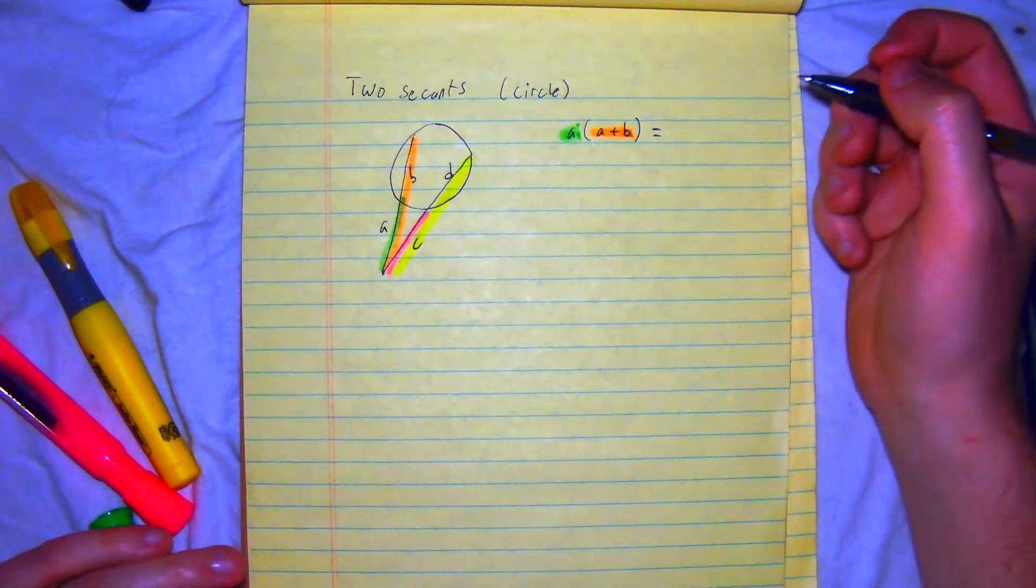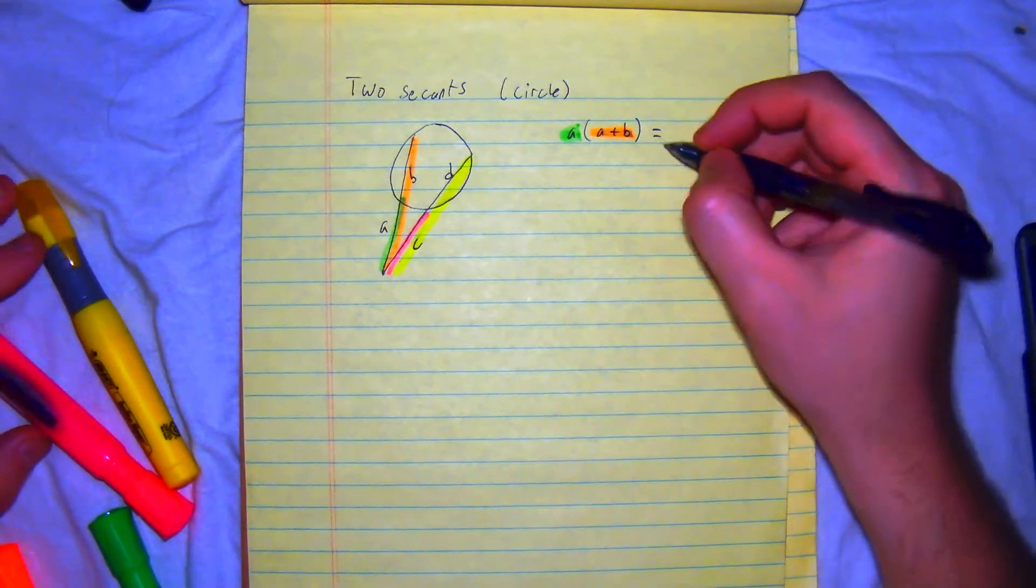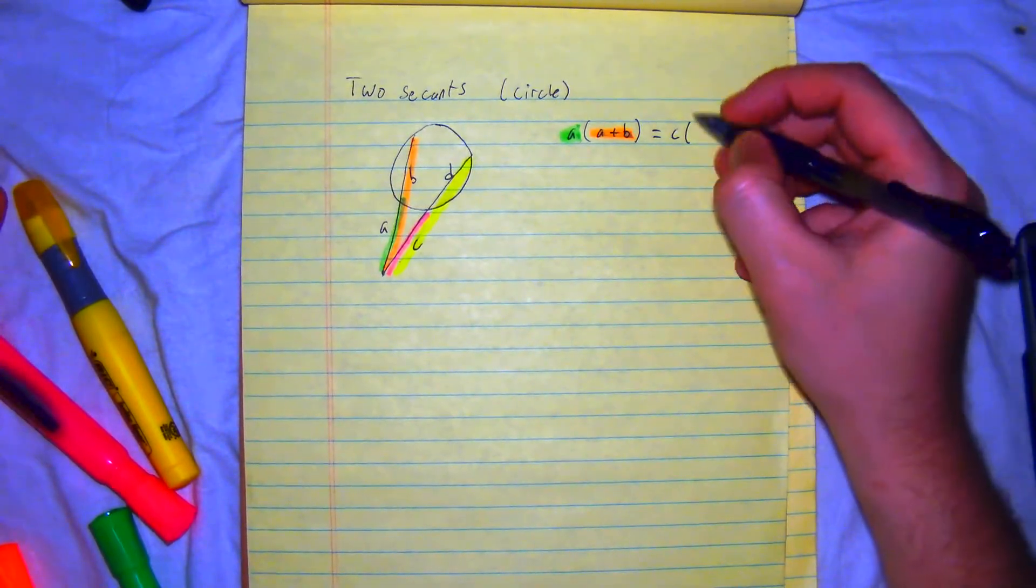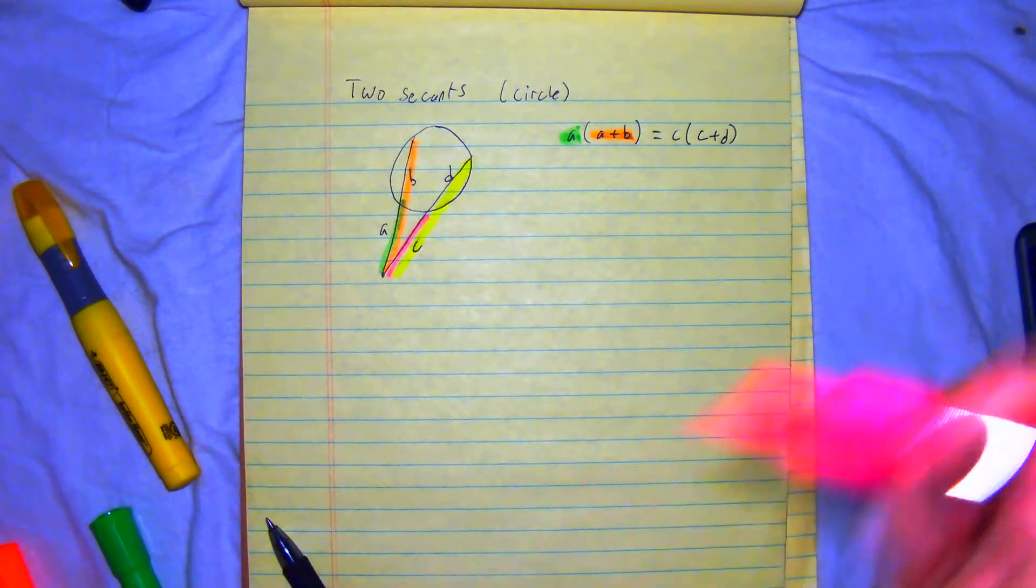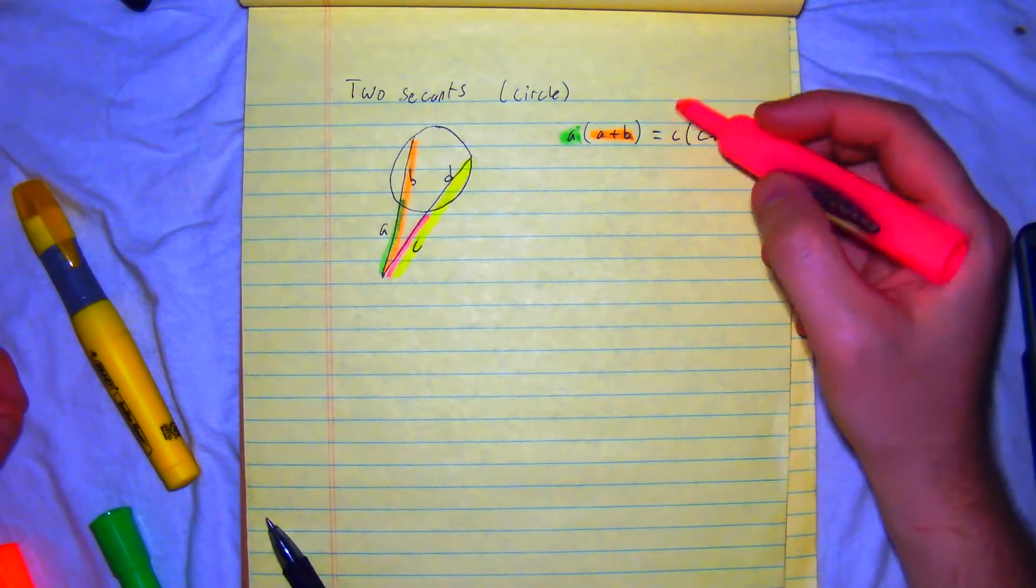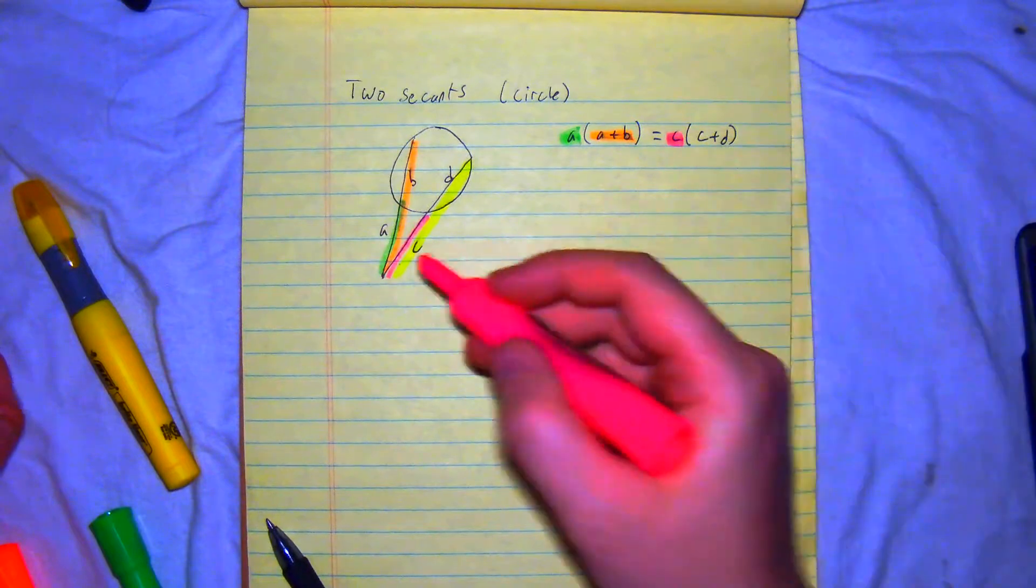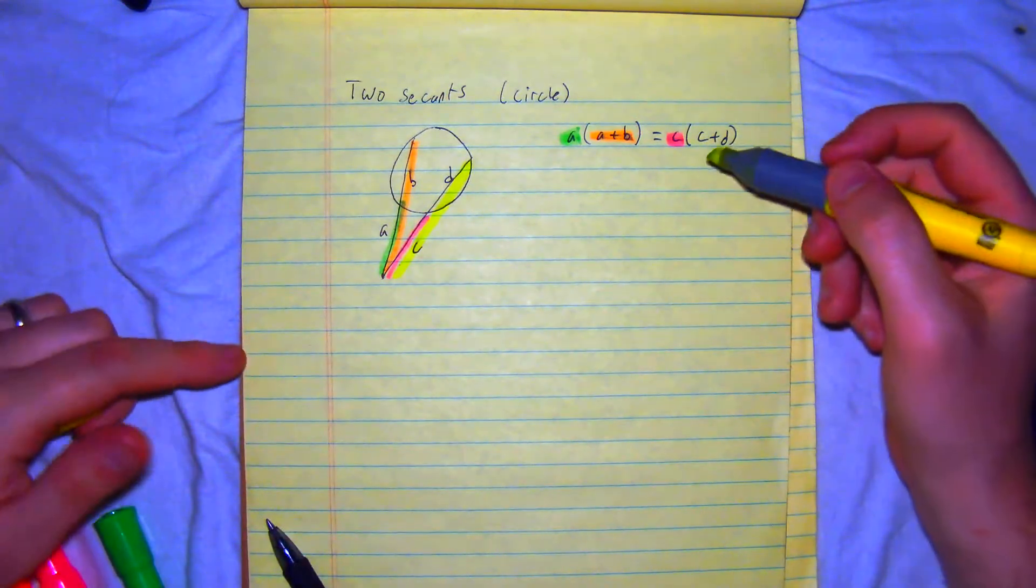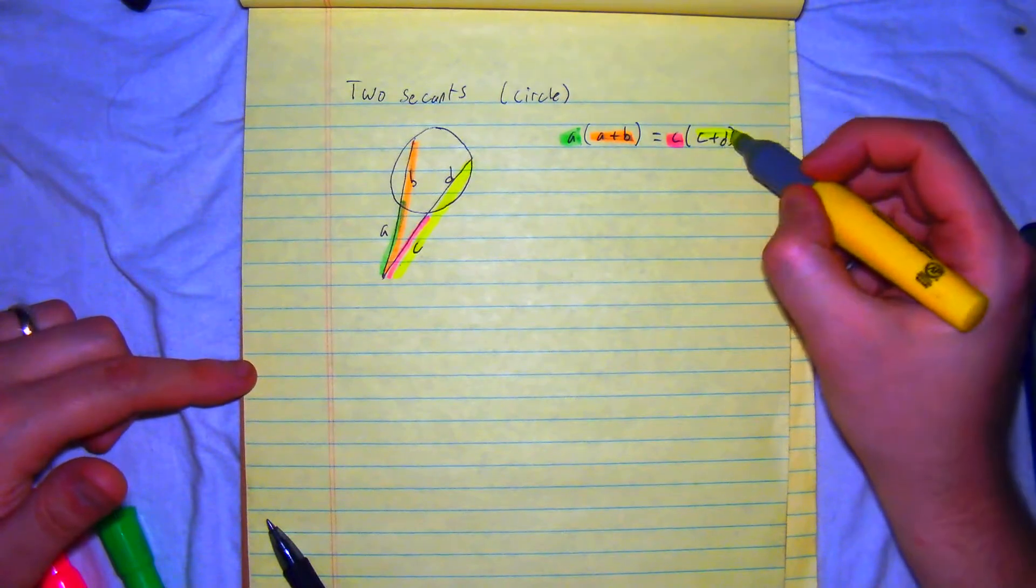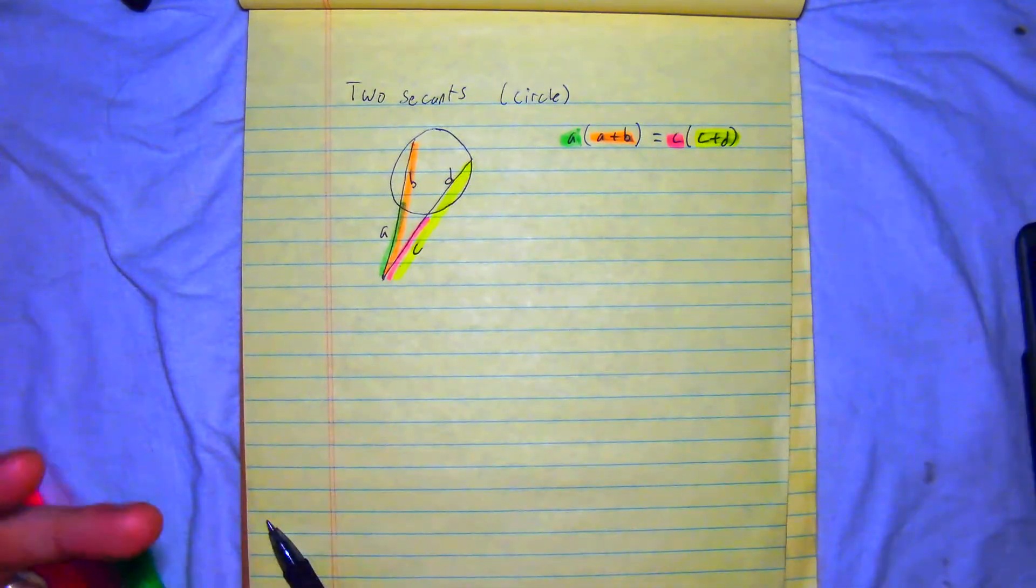which is equal to C times C plus D. C right here. As you can see, it's an outside length. And then the yellow represents the full length of it.